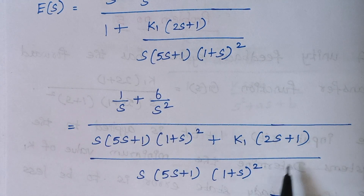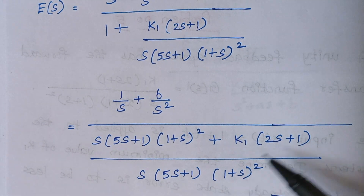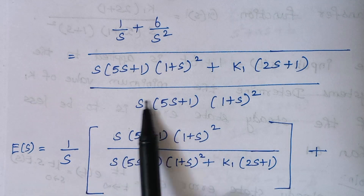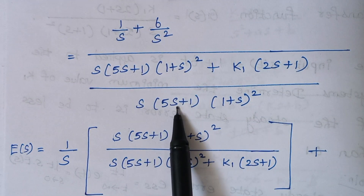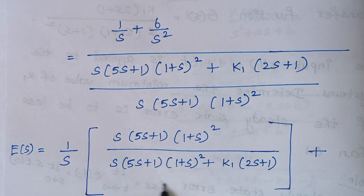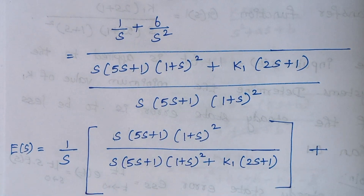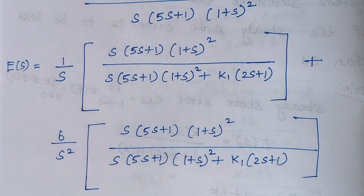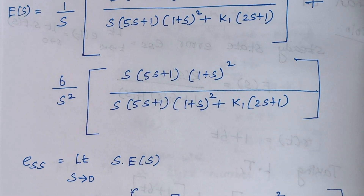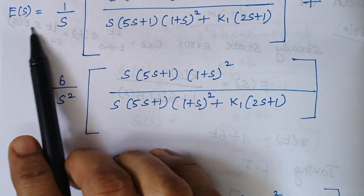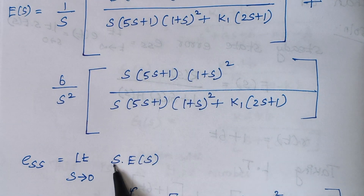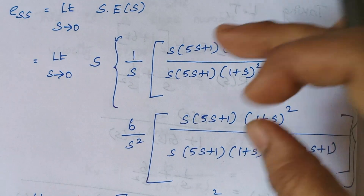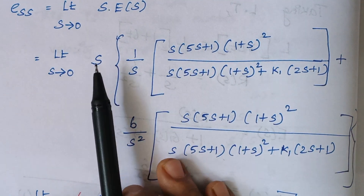The next step is to move the denominator to the numerator side by taking the reciprocal. So the 1/s term — moving it to the numerator means the denominator becomes the numerator and vice versa. Similarly for the 6/s² term. Then the formula is limit s→0 of s·E(s), so we multiply the E(s) expression by s.